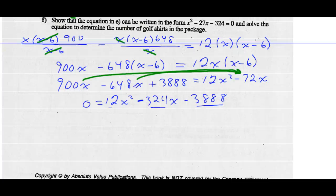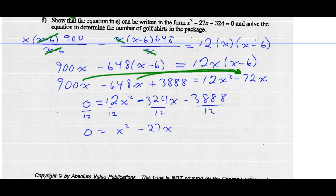So if I divide both sides of this equation by 12, dividing every term by 12: 0 divided by 12 is still 0. Here I get X squared. Negative 324X divided by 12 is minus 27X. And negative 3888 divided by 12 is minus 324. That's the equation we were supposed to get. Very nice.